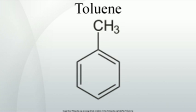When cresol is distilled with zinc dust, toluene is obtained. When toluenesulfonic acid is treated with superheated steam or boiled with HCl, toluene is obtained. Toluidine is first diazotized with sodium nitrite and HCl at low temperature; the diazonium compound thus obtained is heated with alkaline stannous chloride, and this reaction gives toluene.